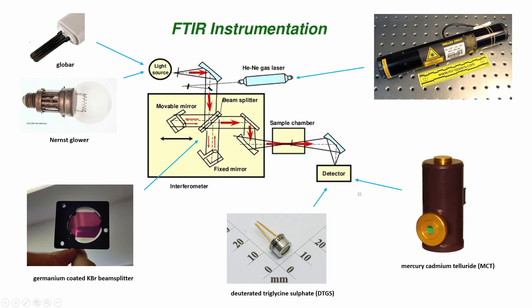Upon recombining, the beam is then sent through the sample into a detector. Classically, either a deuterated triglycine sulphate detector, or a cryo-cooled mercury cadmium telluride detector are used, both capable of producing current when impacted by infrared light. More modern systems may use other detector types that have higher accuracy and are able to function at room temperature.